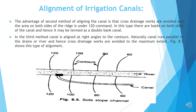The advantage of the second method of aligning the canal is that cross drainage works are avoided, and the area on both sides of the ridge is irrigated. In the third method, the canal is aligned at right angles to the contours. Naturally, the canal runs parallel to the drains or river, and hence cross drainage works are avoided to the maximum extent. Figure 8.5 shows this type of alignment.